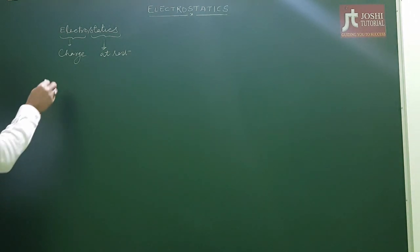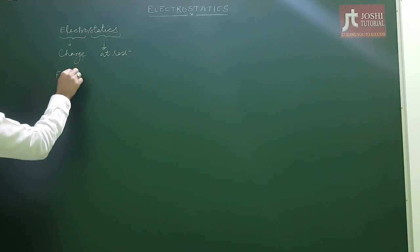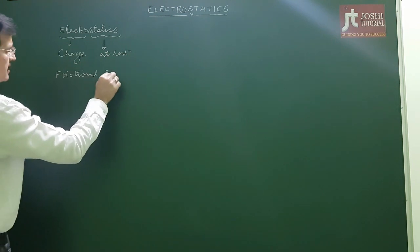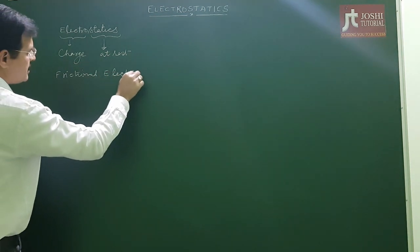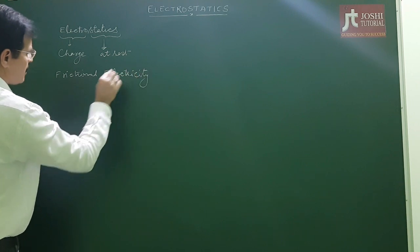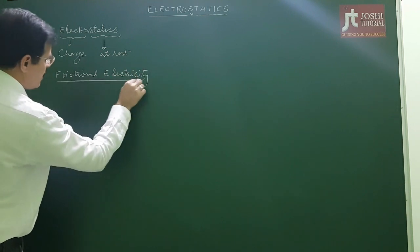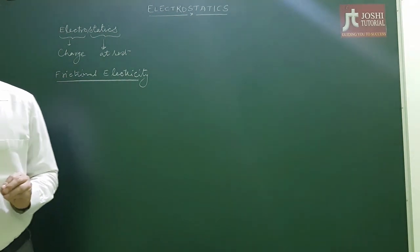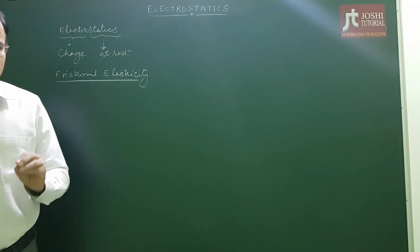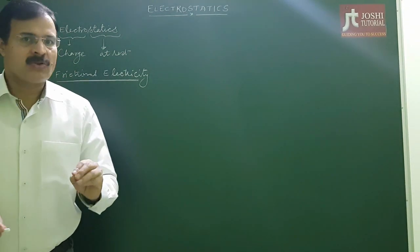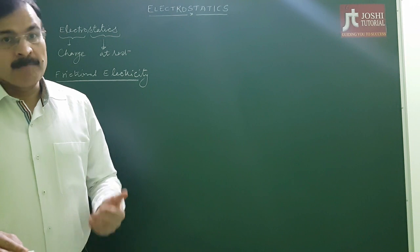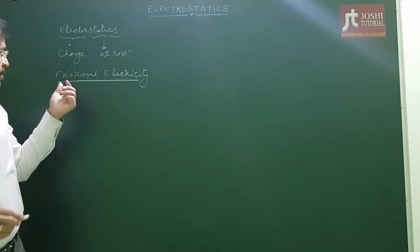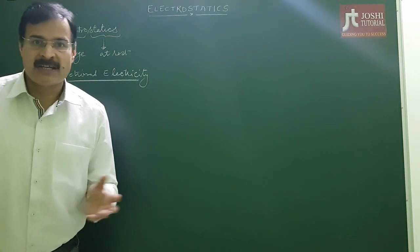Now we are going to talk about frictional electricity. Frictional electricity: when two bodies are rubbed against each other, the process of charging on the bodies by rubbing against each other due to friction is called frictional electricity.